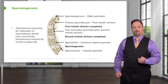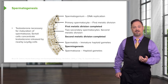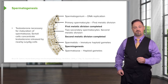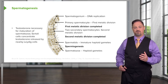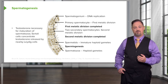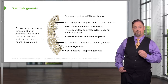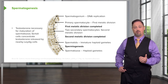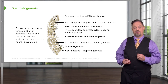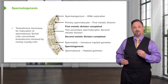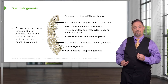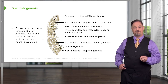Testosterone is a necessary hormone for the process of spermatogenesis and spermiogenesis to proceed effectively. Leydig cells, located just outside the seminiferous tubules, secrete testosterone. The Sertoli cells, which are within the seminiferous tubules and support the maturing spermatozoa, will concentrate that testosterone to over a hundred times the concentration found anywhere else, so that the spermatids can become spermatozoa and make the male fertile.